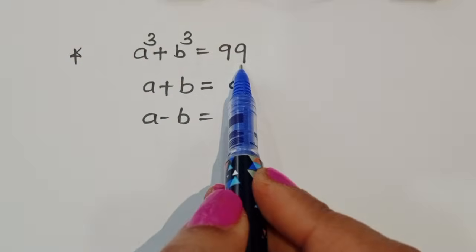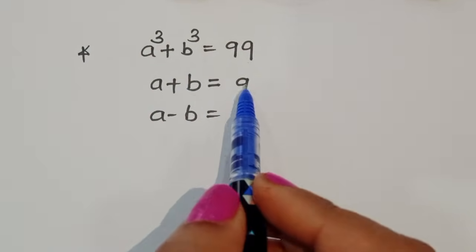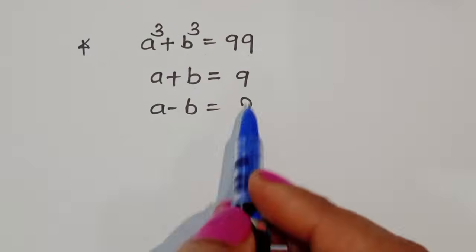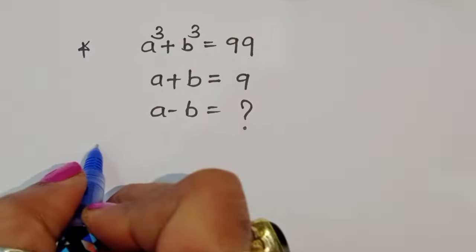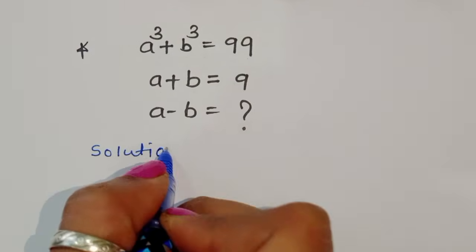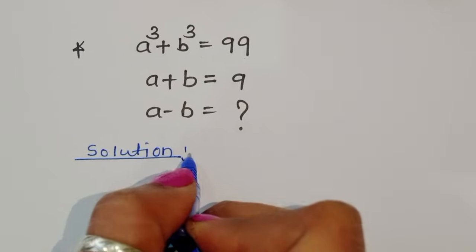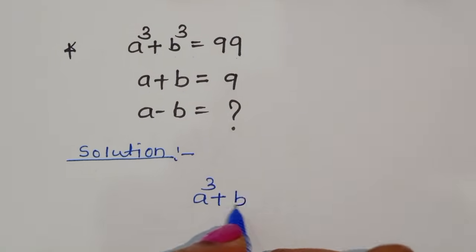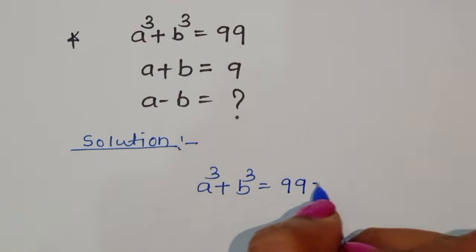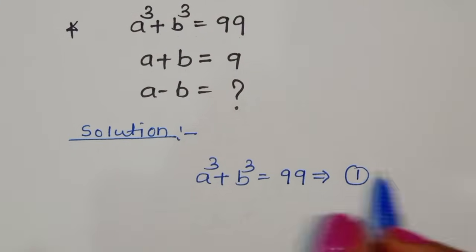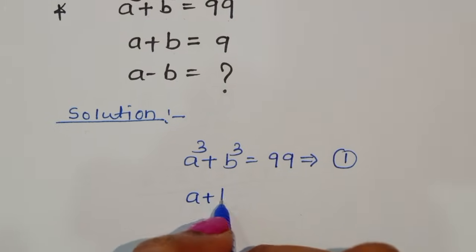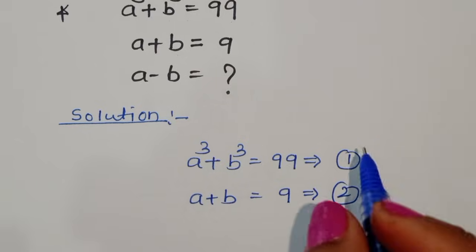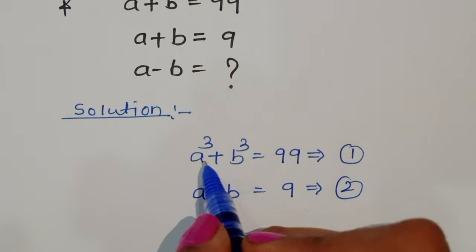We are given that a cube plus b cube is equal to 99, and a plus b is equal to 9. We have to find the value of a minus b. So let's see the solution. The first equation is a cube plus b cube equals 99, and the second equation is a plus b equals 9.